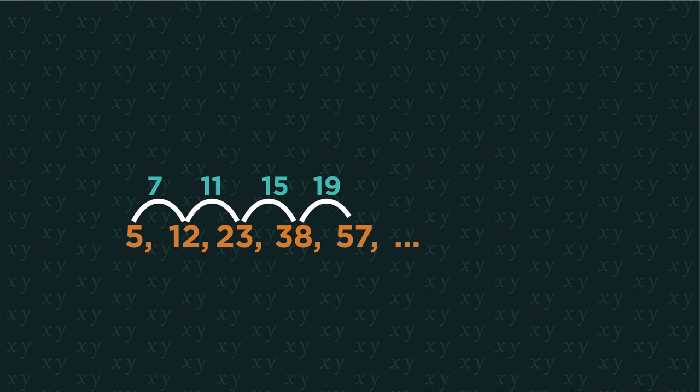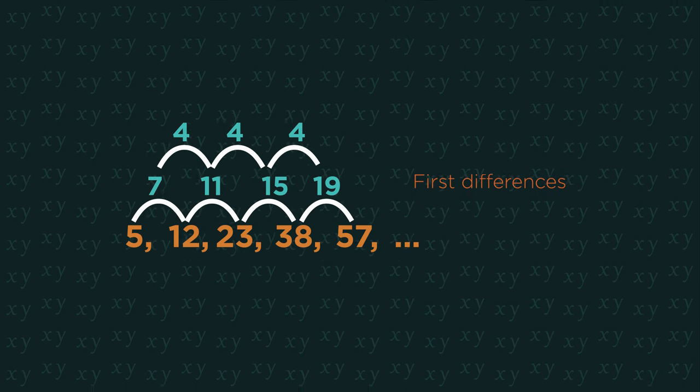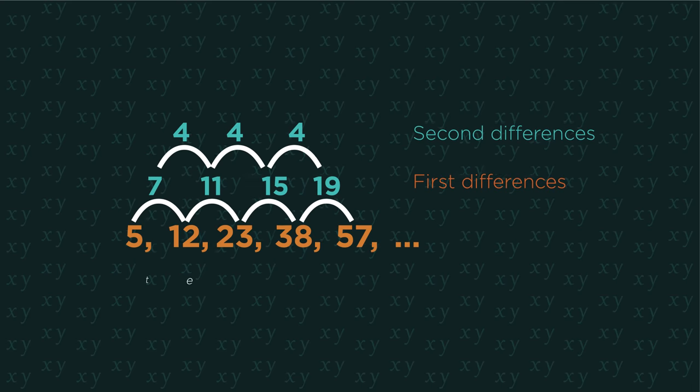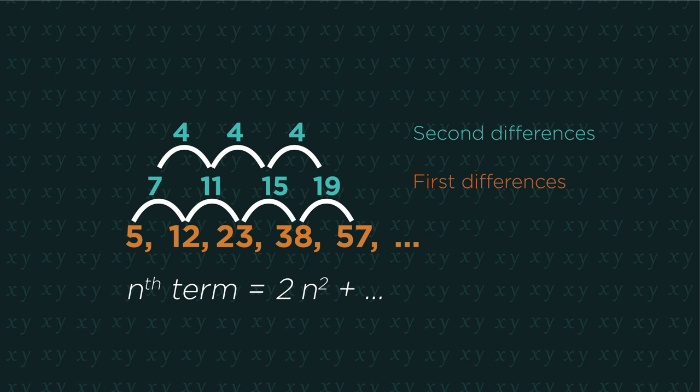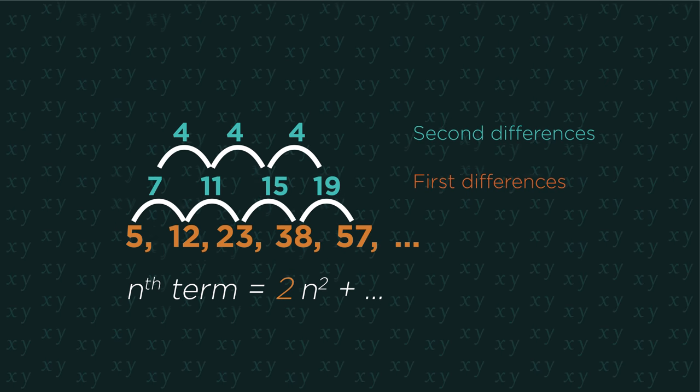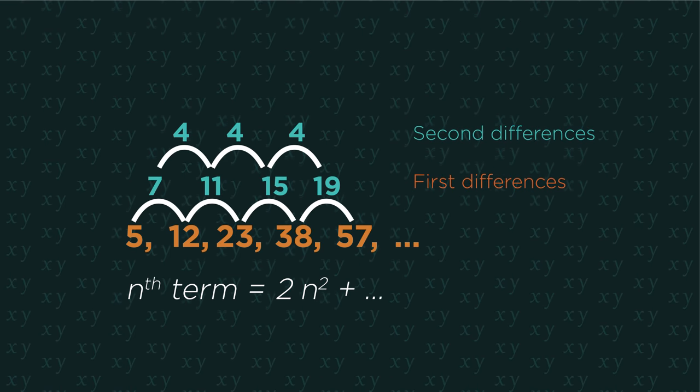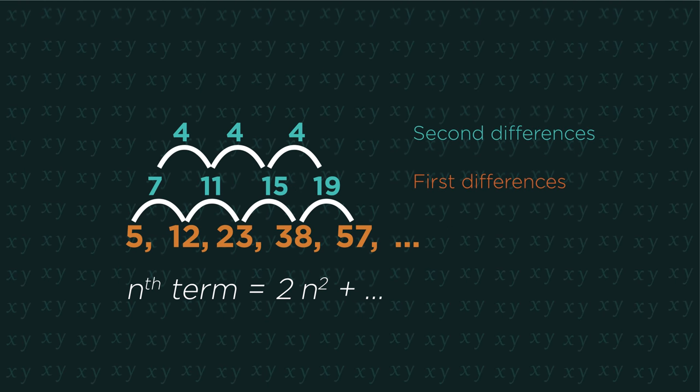Find the first and second difference. Because the second difference is 4, the quadratic will be 2 n squared. Remember that we always half the second difference.